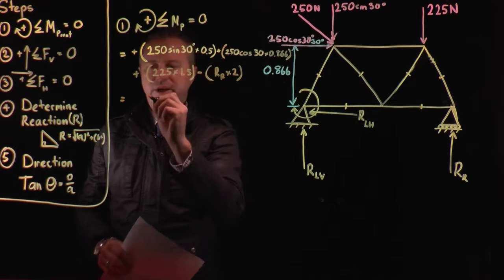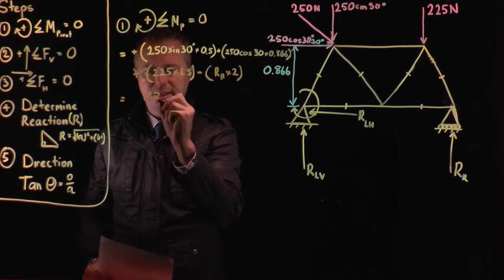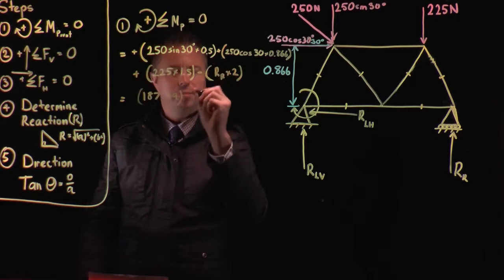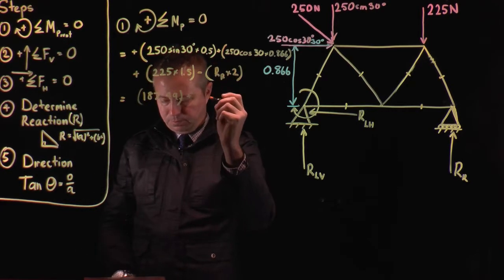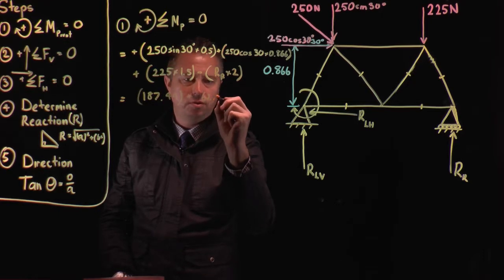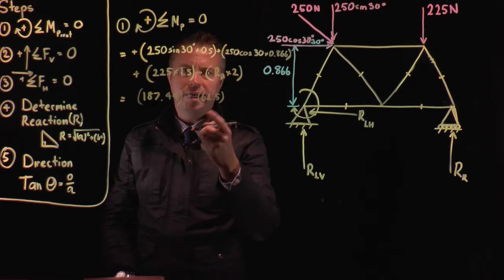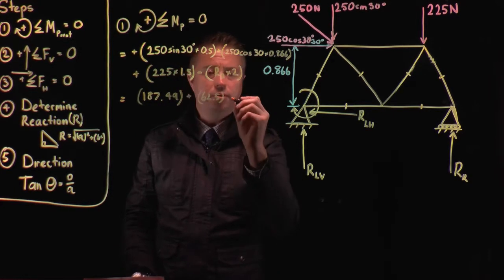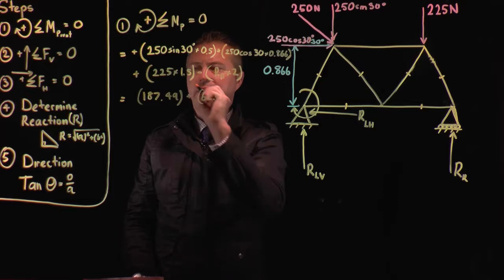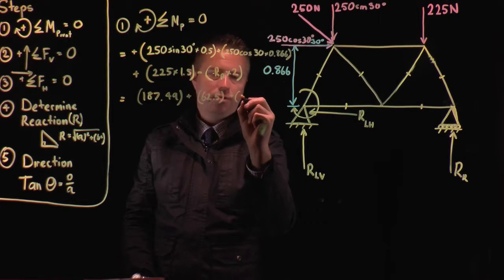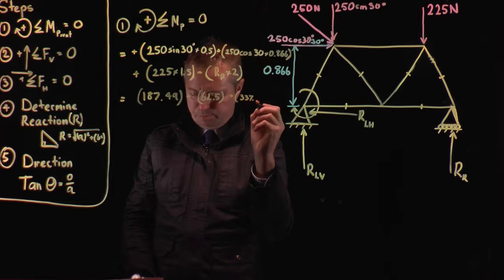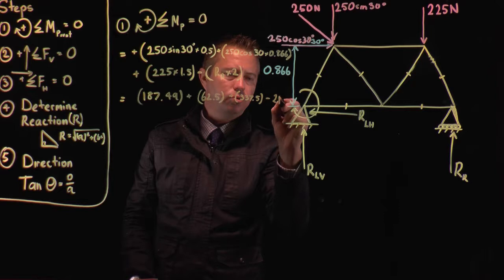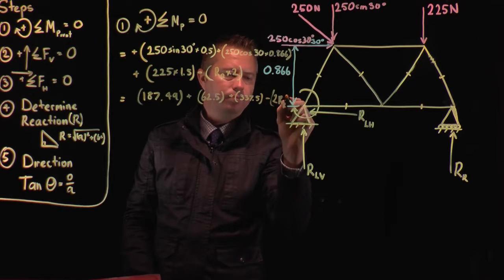So we get our next bit. In brackets, we've got 187.49 plus 62.5. So I encourage you to put all this through your calculator and do it properly. I'm just moving quickly across so we can continue on with the presentation. Then we've got down here, plus 337.5. And then the last one is minus 2RR, reaction R.